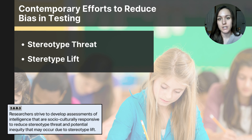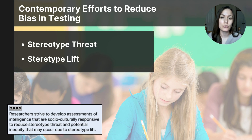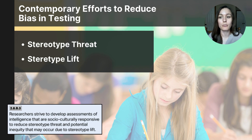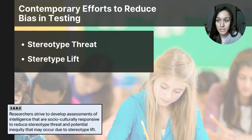Two key concepts related to cultural bias are stereotype threat and stereotype lift. Stereotype threat occurs when individuals from a negatively stereotyped group perform worse on a test after being reminded of the stereotype. For example, if women are reminded of the stereotype that men are better at math, their test performance may suffer compared to women who are not reminded of this. Stereotype lift happens when individuals from a positively stereotyped group perform better after being reminded of their group's advantage — for example, men reminded of their stereotyped math superiority might perform better. To minimize both effects, researchers focus on language choices in tests, such as avoiding consistently using male names in math problems, and reducing culturally specific content.